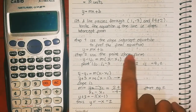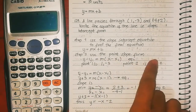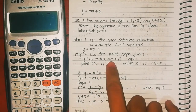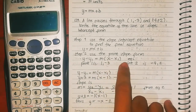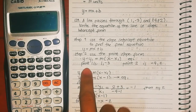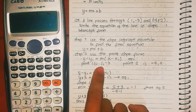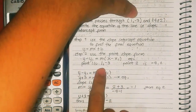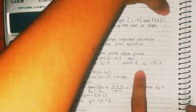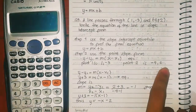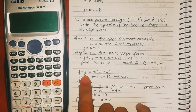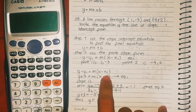Step 2: use the point-slope form. The equation is y minus y1 equals m times (x minus x1). Point 1 is (1, -3) and point 2 is (-4, 2). By substitution: y minus y1 equals m times (x minus x1).